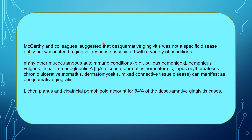McCarthy and colleagues suggested that Desquamative Gingivitis was not a specific disease in itself, but was instead a gingival response associated with a variety of conditions. Many mucocutaneous autoimmune conditions — such as Bullous Pemphigoid, Pemphigus Vulgaris, and linear immunoglobulin disease — can manifest as Desquamative Gingivitis. Lichen Planus and Cicatricial Pemphigoid account for about 84% of Desquamative Gingivitis cases.